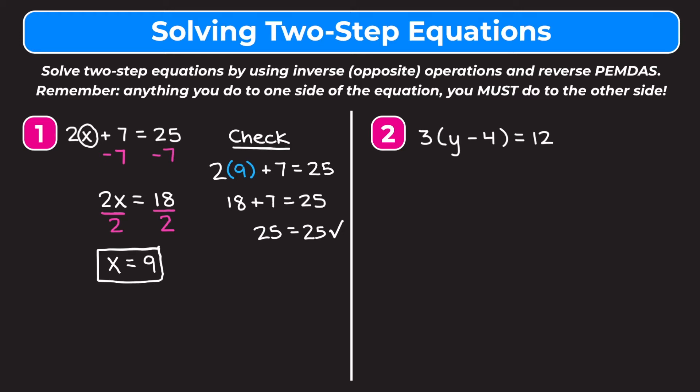Example two is 3 times the quantity of y minus 4 is equal to 12. Again we use reverse PEMDAS. We have a 3 being multiplied by something in parentheses. Normally parentheses come before multiplication in PEMDAS, so for reverse PEMDAS multiplication comes first. We want to get rid of the 3 that's being multiplied, so we need to divide both sides by 3, because multiplication and division are inverse operations.